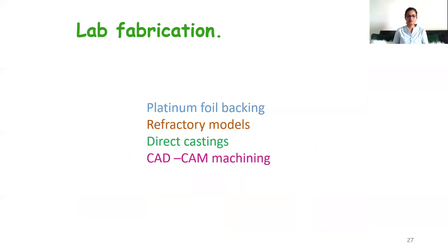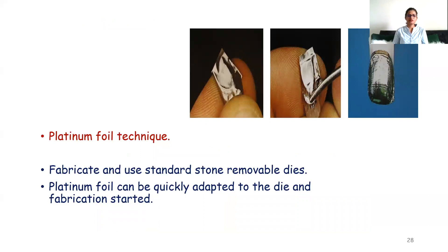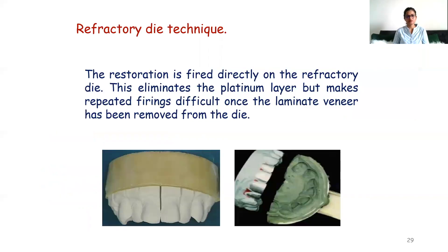Coming on to lab fabrication — there are different methods. First is the platinum foil technique: fabricate and use standard stone removable dies, then adapt platinum foil to the die and start fabrication. The advantage is it is easy to measure veneer thickness during fabrication; the disadvantage is the foil cost is high and foil distortion can occur. Next is the refractory die technique: the restoration is fired directly onto the refractory die without needing platinum foil. The advantage is overall accuracy and fit is generally better; the disadvantage is it is more difficult to control veneer thickness and requires duplication of the stone cast.